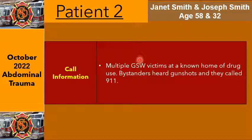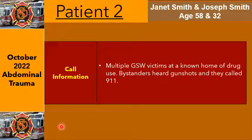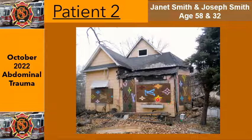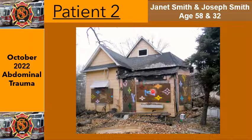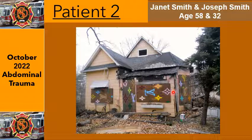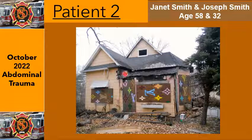Let's do a multi-victim scenario. Janet Smith and Joseph Smith, 58 and 32 years old. Multiple GSW victims at a known home of drug use — bystanders heard gunshots and called 911. We need to be worried about scene safety and have law enforcement there first. Once law enforcement clears you to go in, consider scene hazards: known drug use — were they cooking meth? Is this place going to explode? Make sure you have the resources available to provide care to multiple patients.